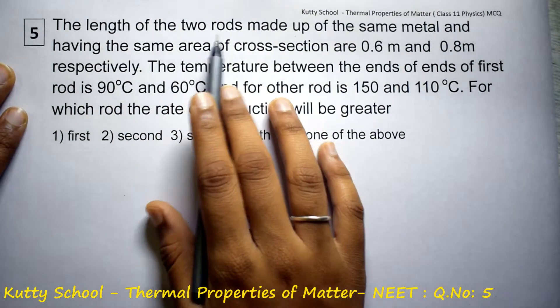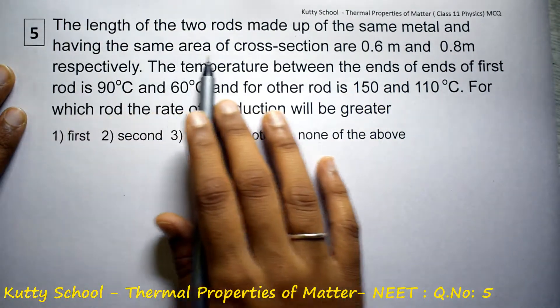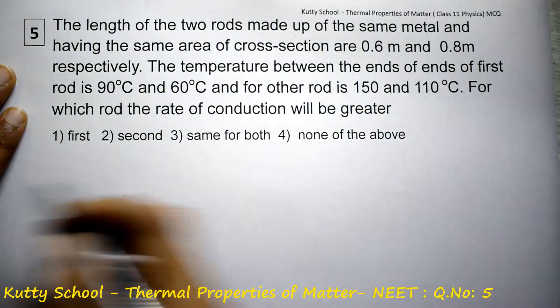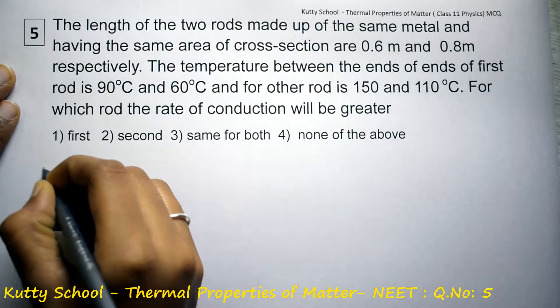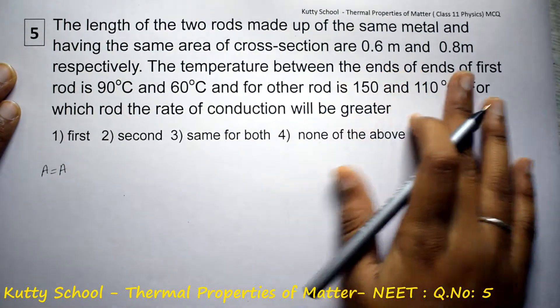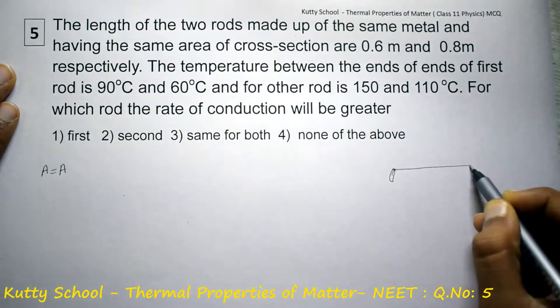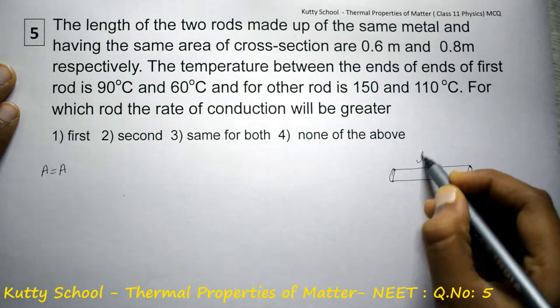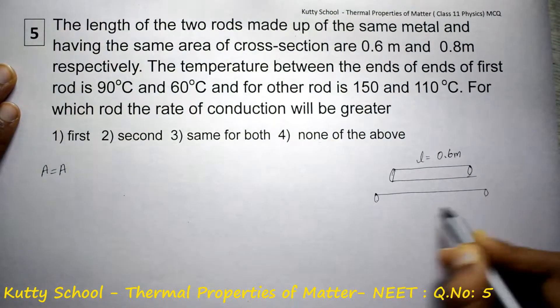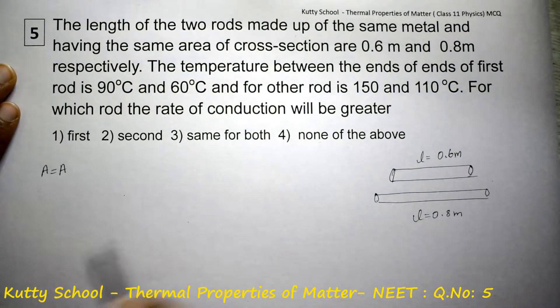The length of the two rods made up of the same metal and having the same area of cross-section are 0.6 meters and 0.8 meters respectively. Area is constant, so length is 0.6 meter and 0.8 meter for the two rods.